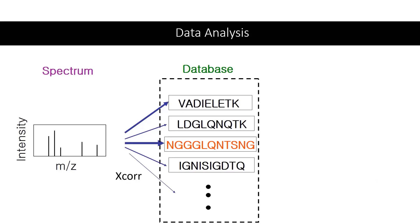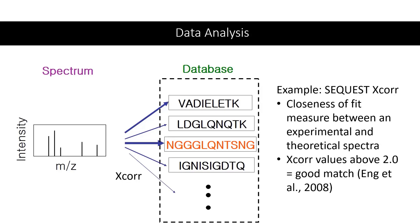One example of this is Sequest, which is a popular data analysis program used for protein identification. This program correlates experimental MS-2 spectra of peptides against theoretical spectra of known peptide sequences in a sequence database. Sequest will then provide you with a score, which is a closeness of fit measure. Score values above 2 are usually indicative of a good match.